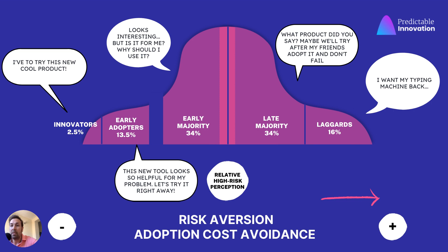The more on the left, the more they are focused on the benefit. Innovators and early adopters are mainly focused on the benefit of the product and are less risk-averse. As the market matures and we go to the right, the more risk-averse they are, and the more they focus their purchasing decision on the cost they are going to experience to adopt that technology.